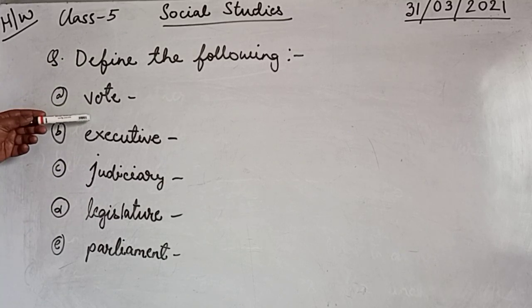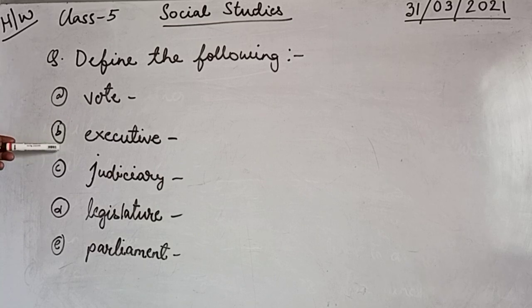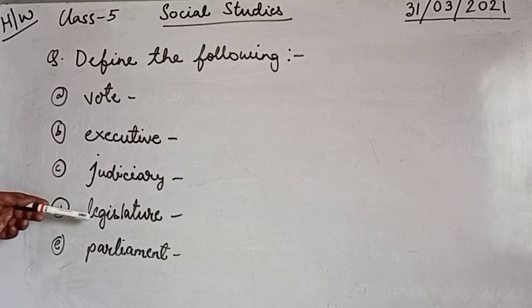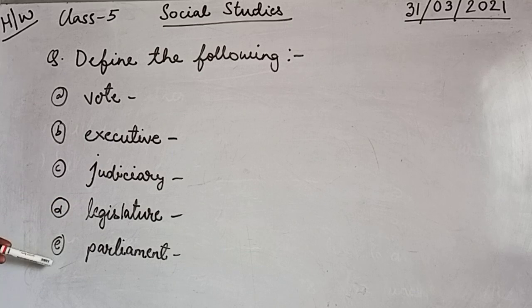Number A: vote. Number B: executed. Number C: judiciary. Number D: legislature. And number E: parliament.